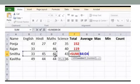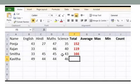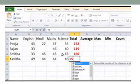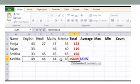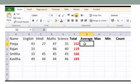To calculate the total of Kavita, press equal to sum B5 to E5, press enter. Next, to calculate the average, give equal to, type the function average.